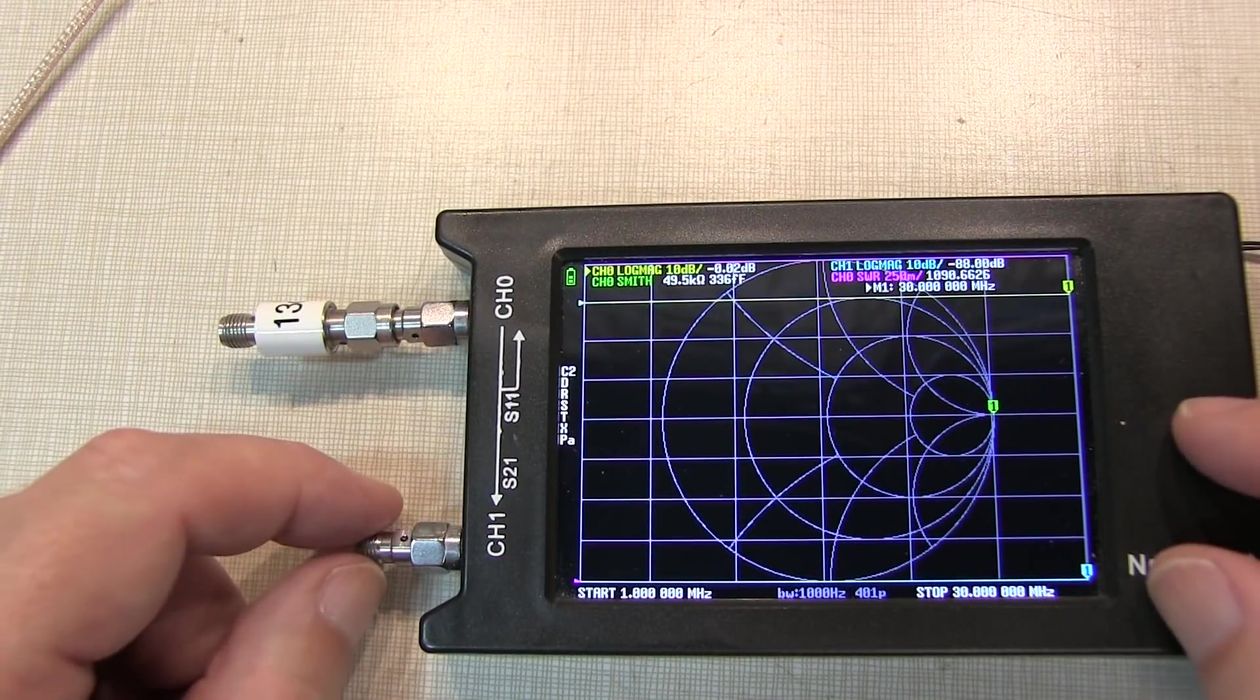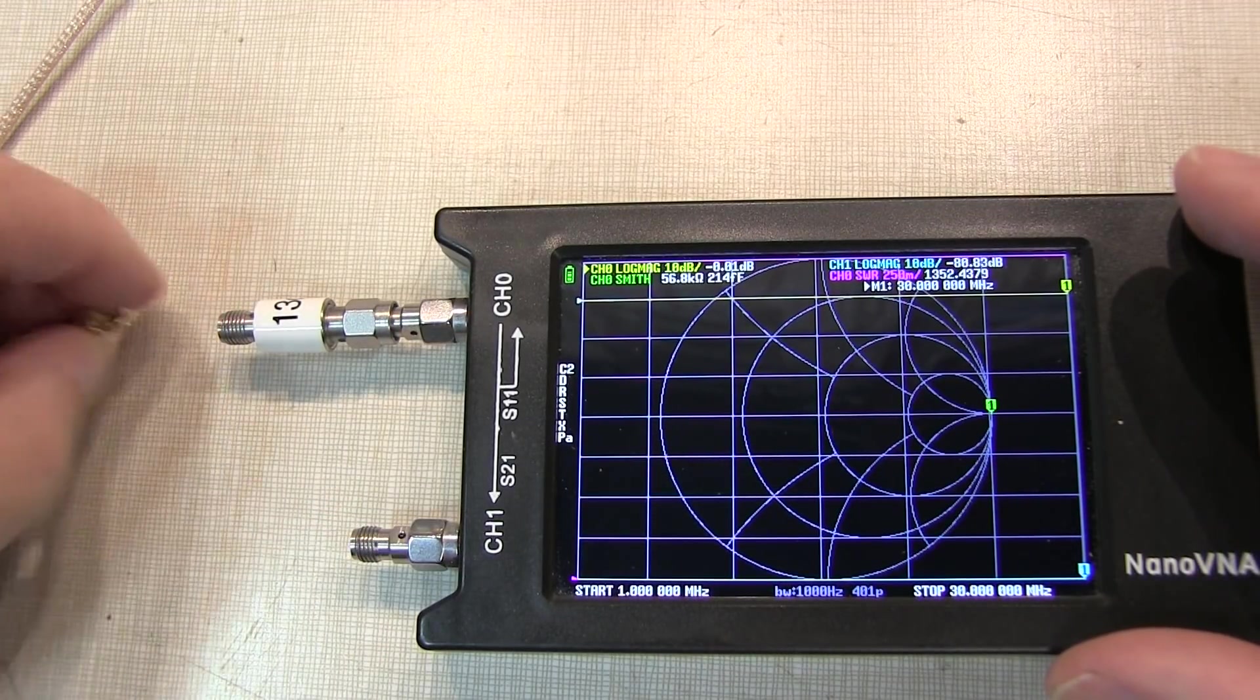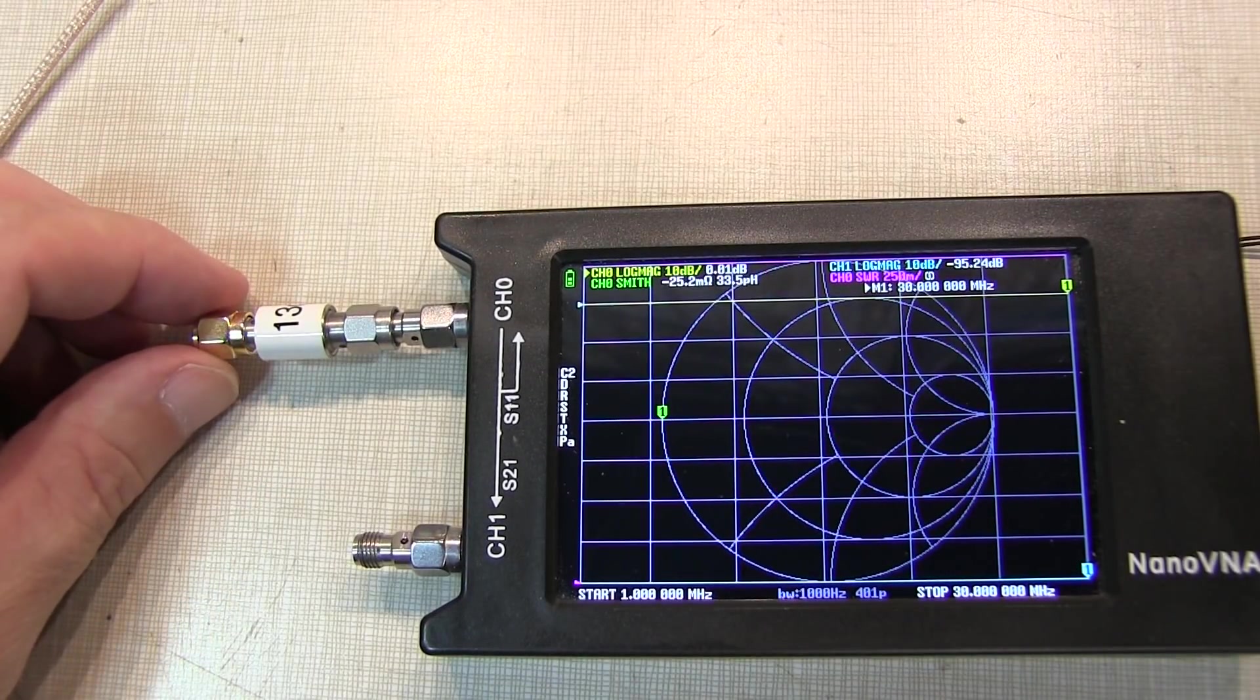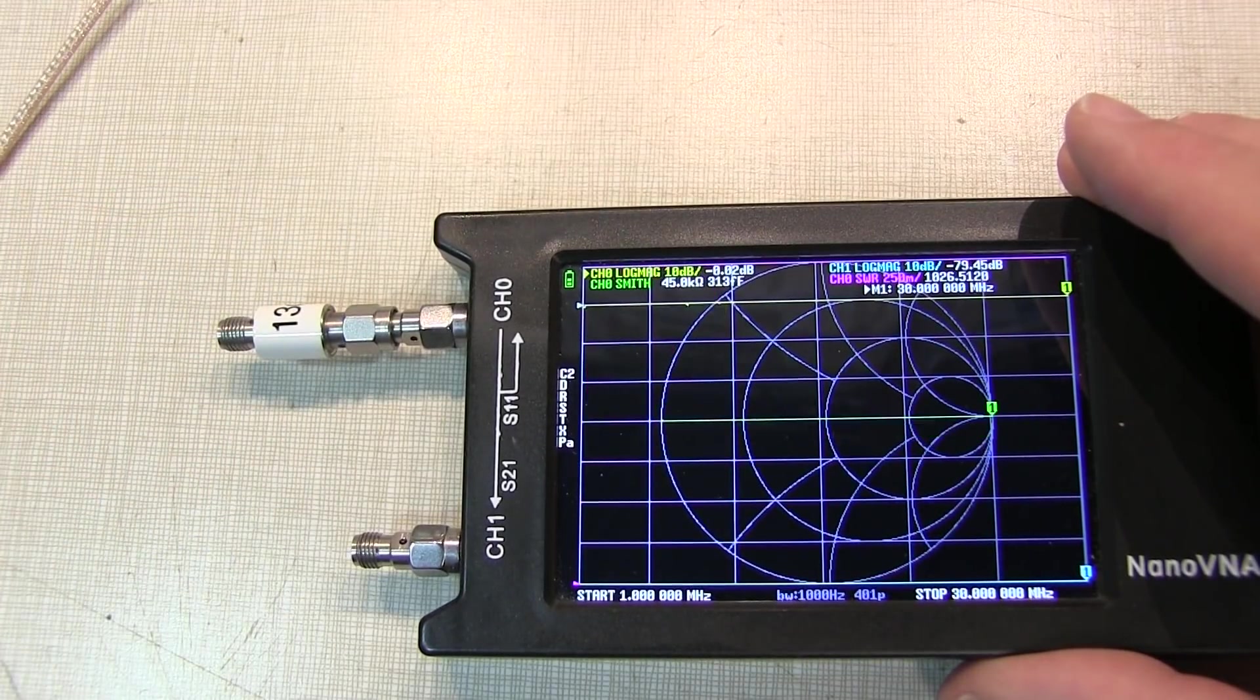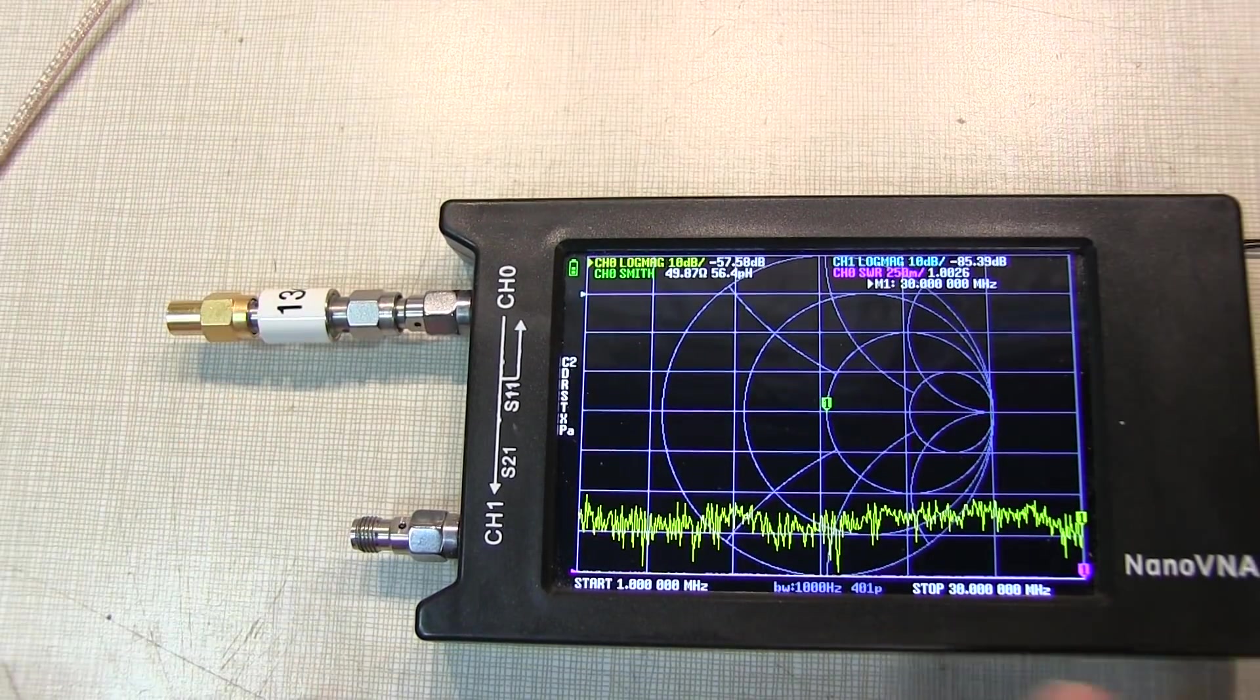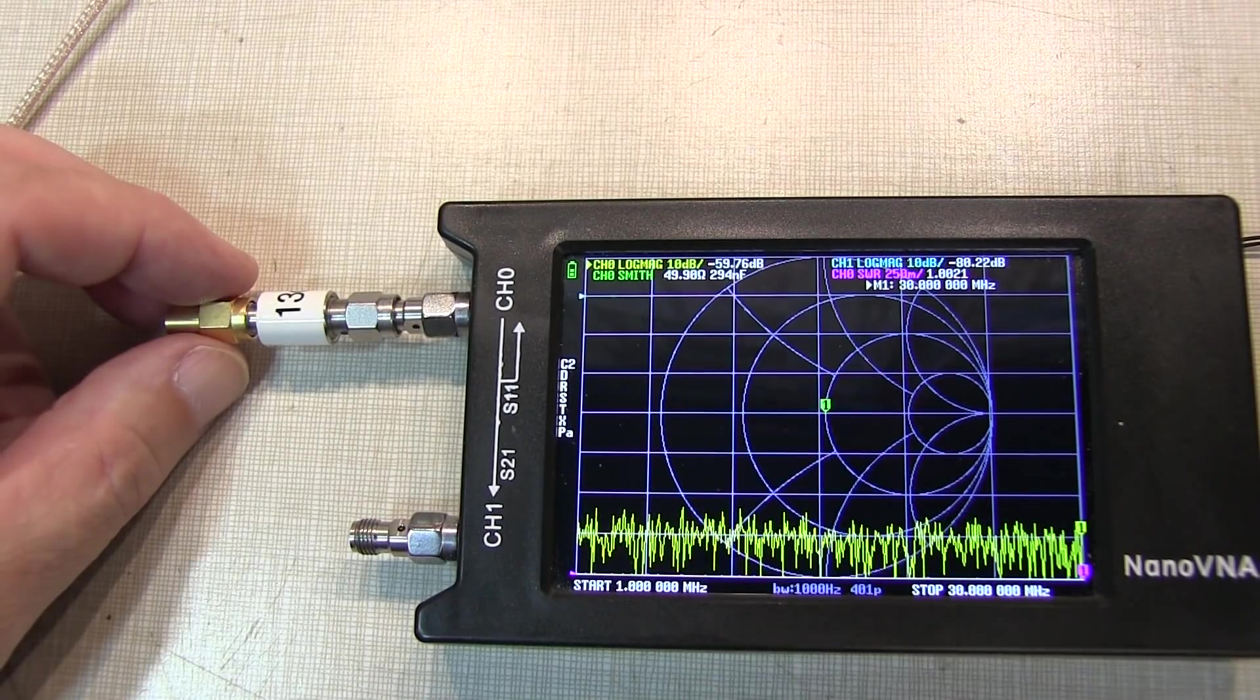With that calibration complete, we can validate that the calibration all worked. I can see I've got my open. I've got nothing connected here. If I connect my short to the output here, we can see the Smith chart moves all the way over to the 9 o'clock position indicating a short. And if we replace that short with the 50 ohm load, we can see that the Smith chart returns right to the bullseye indicating I've got a 50 ohm load. So now the calibration is complete, and we're ready to go make the measurement on our amplifier.